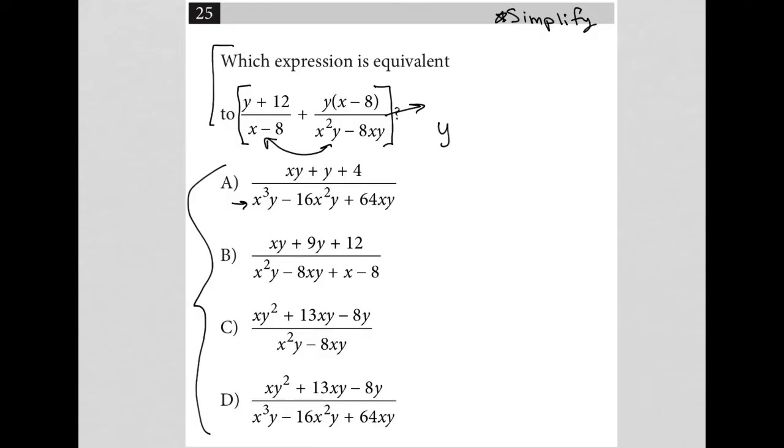So if I have (y + 12)/(x - 8) plus y(x - 8)/(x²y - 8xy). I'm going to do a little bit of simplification here. This denominator here, if I pull a GCF out, would become xy times (x - 8).